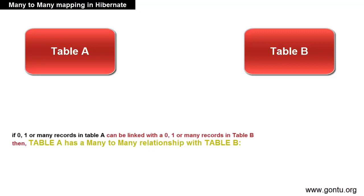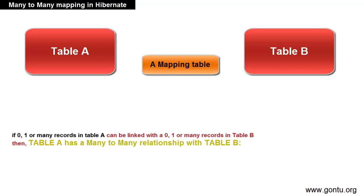Before I go and hit demo, let me tell you what exactly is the meaning of a many-to-many relationship between two tables in a database. For any two tables A and B, if zero, one or many records in table A can be linked to zero, one or many records in table B, then table A is said to have a many-to-many relationship with table B and vice versa.